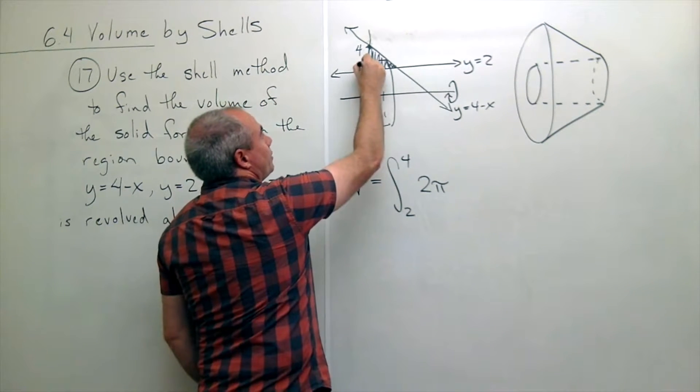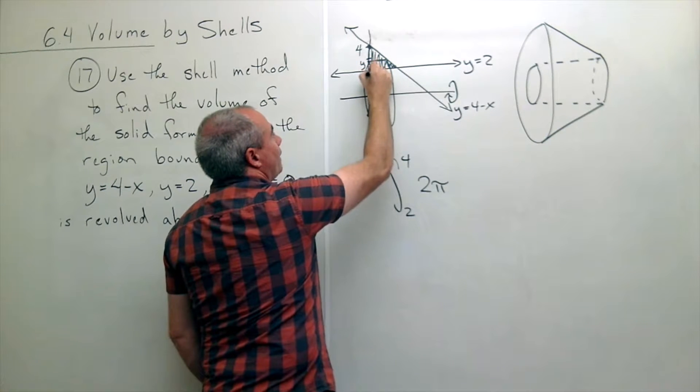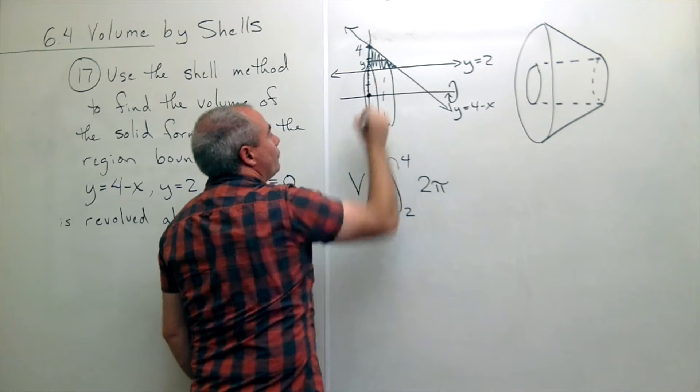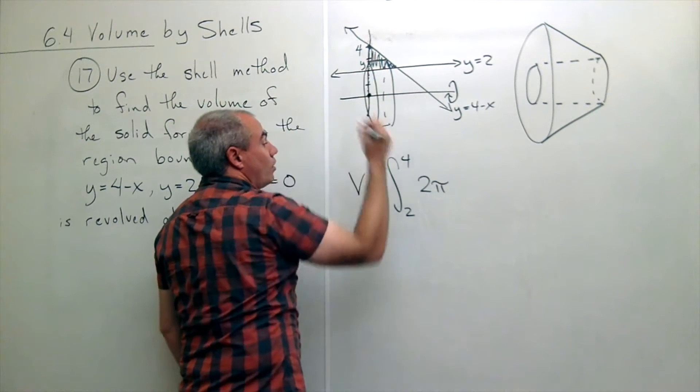So I integrate from two to four of two pi times r. And if I'm sitting up here at some y value, then how far am I from the center of this shell? And in this case, it's also just y.